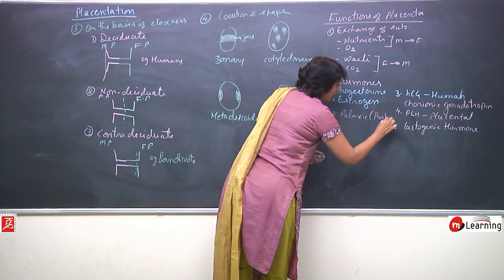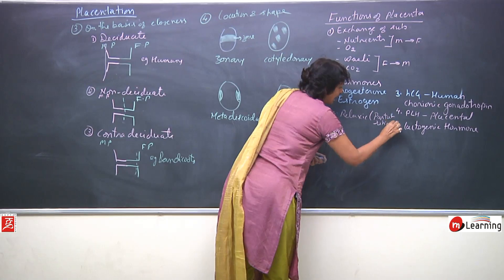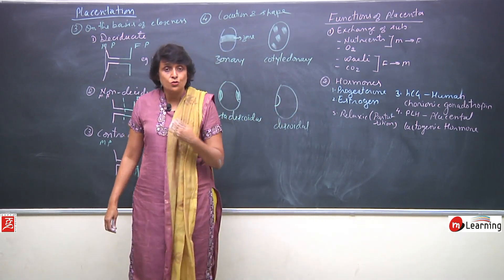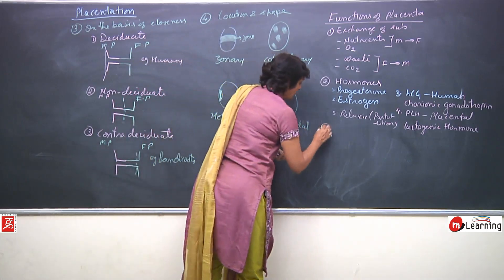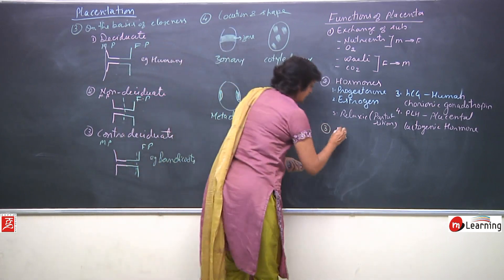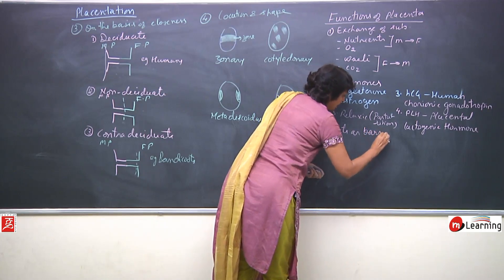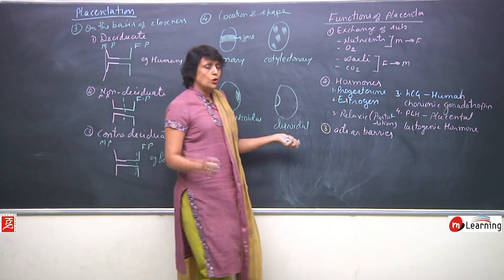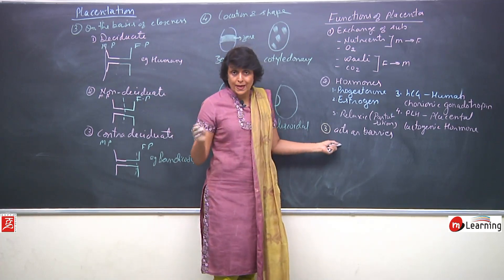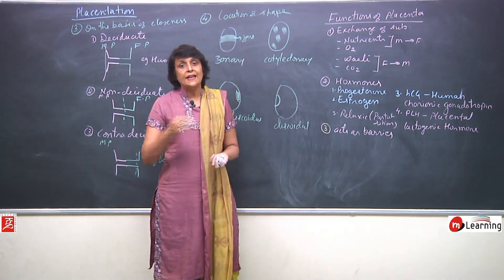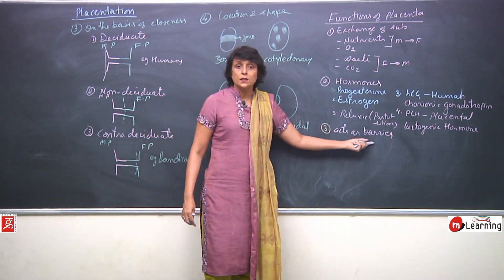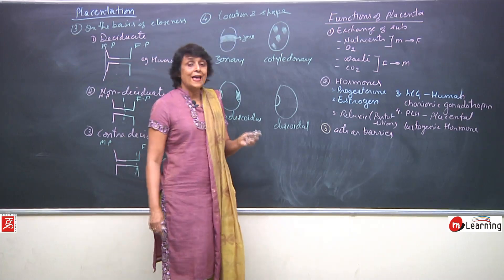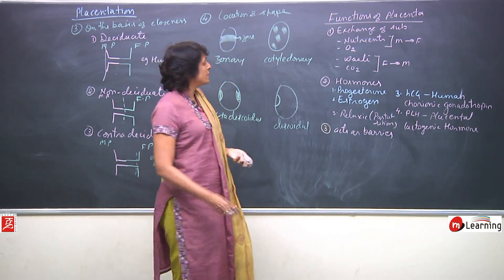Towards the end, during parturition, the placenta also releases some quantity of relaxin. Relaxin is not produced all the time — it is mainly produced by the corpus luteum — but at the time of parturition when the baby is to be expelled, some is also released. Another important function of placenta is that it acts as a barrier for most chemicals and germs. Most bacteria and viruses cannot cross the placenta.